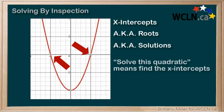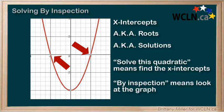When you are asked to find the solutions, or solve a quadratic, you are being asked to find the x-intercepts. There are a few ways we're going to do this, and one of the easiest ways is by inspection. This is a fancy way to say we figured it out by looking at the graph.